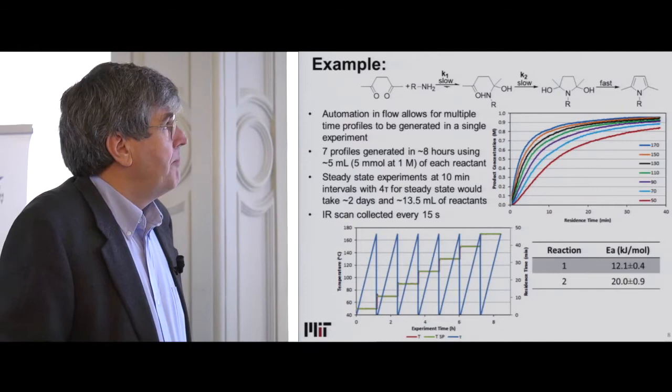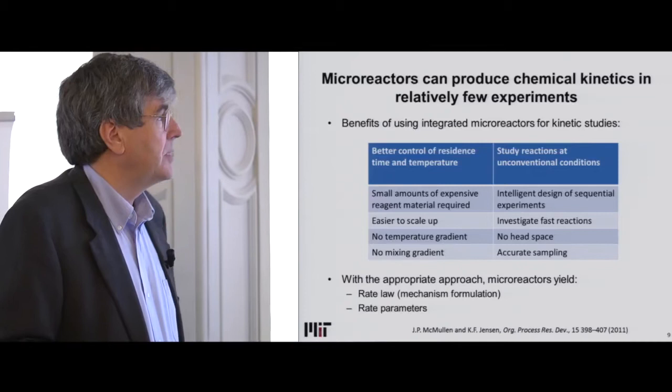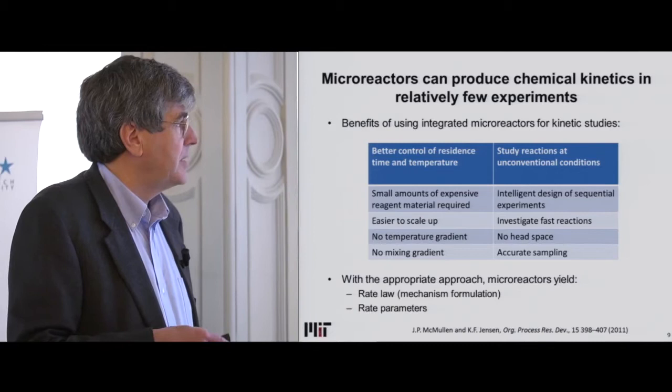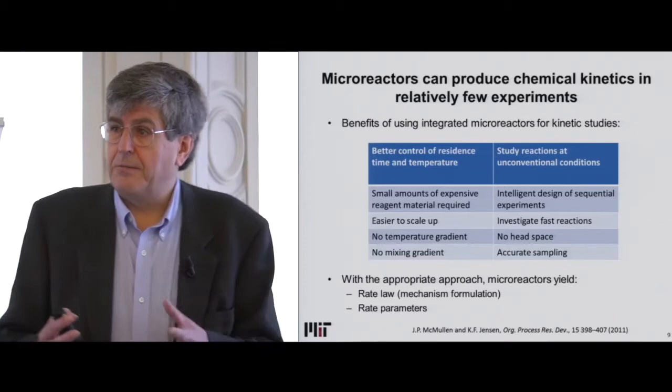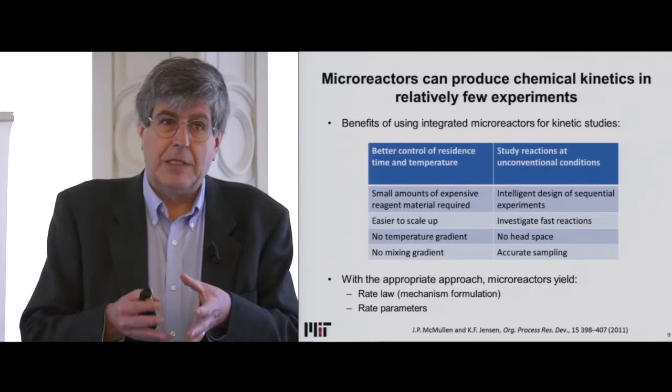We can use this to get kinetics. The other nice thing is we can use small amounts of expensive reagents, it's easier to scale up, we can avoid temperature gradients, ensure things are mixed, look at very fast reactions, and we don't have a headspace. One of the big problems with running things in batch is that you get stuff in the vapor above that you have to be very careful about in terms of safety, and when you start sampling you're not sure if you're really sampling from the liquid or from the gas. So we can avoid all of that.